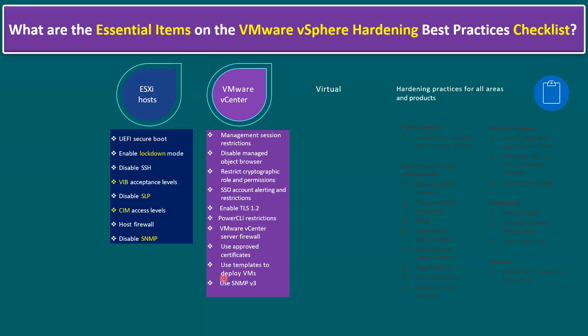Use templates to deploy virtual machines. Instead of deploying a virtual machine from ISO in a production environment, we should make sure there is one master image for all OS flavors — like Windows, Linux, Solaris, and any other OSes. All OSes must have a master image template. Before making the VM a template, that VM must be hardened at the guest OS level. Only that hardened template should be used for production virtual machine deployment.